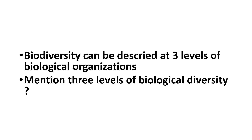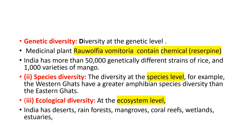The three levels of biodiversity are: one, genetic diversity — diversity at the genetic level; two, species diversity — diversity at the species level; three, ecological diversity — diversity at the ecosystem level.